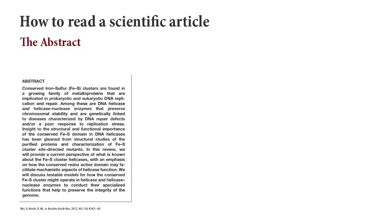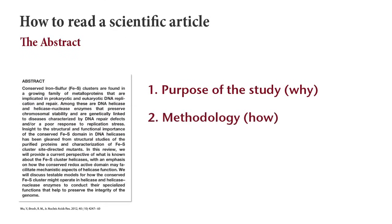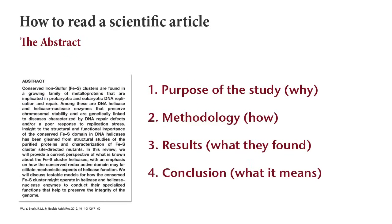Abstracts usually contain four kinds of information: the purpose or rationale of study (why they did it), the methodology (how they did it), results (what they found), and the conclusion (what it means). After reading the abstract, ask yourself: is this article worth reading or should I move on to another one?